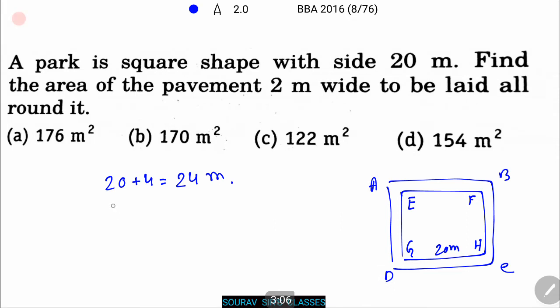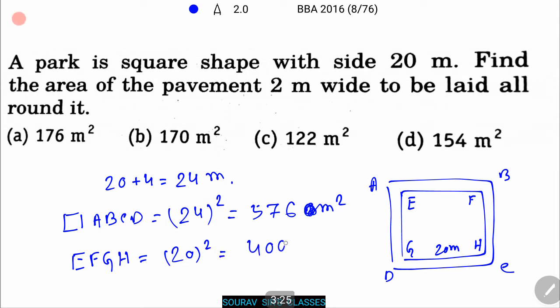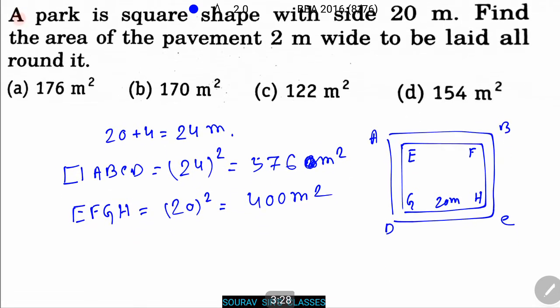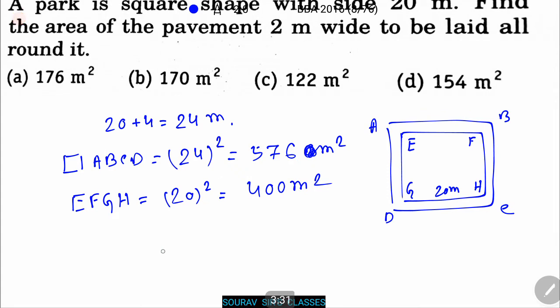Now, the area of the square ABCD equals 24 whole squared, that means 576 meter square. And the area of the square EFGH equals 20 whole squared, that equals 400 meter square. Therefore, the area of the pavement, that means the area of the square ABCD minus the area of the square EFGH, that equals 576 minus 400, that equals 176 meter square. So option A will be the right answer. Next problem.